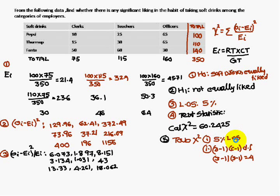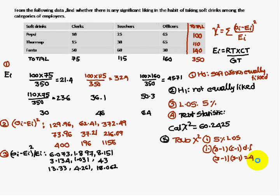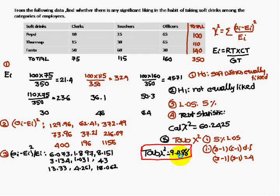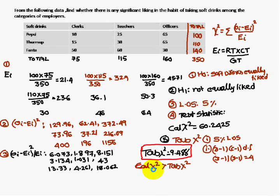For the 5% level of significance, the degree of freedom formula is (r minus 1) into (c minus 1). Number of rows is 3, so 3 minus 1 = 2; number of columns is 3, so 3 minus 1 = 2; therefore degrees of freedom = 4. The tabulated chi-square value is 9.488. The calculated chi-square of 60.24 is greater than the tabulated value of 9.488.